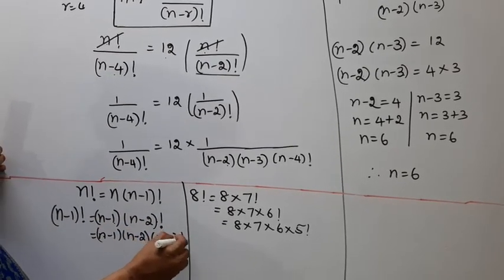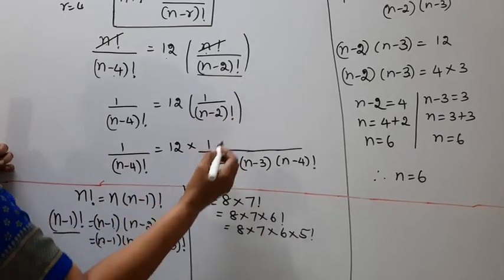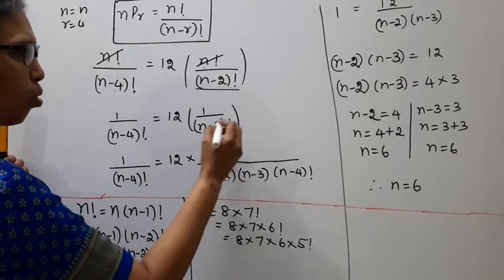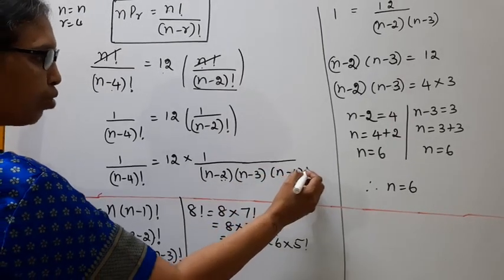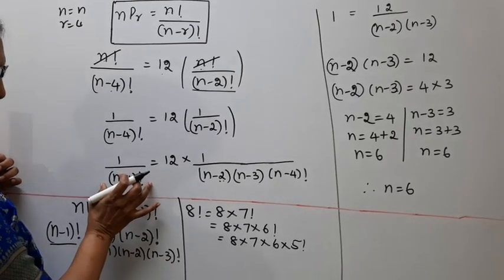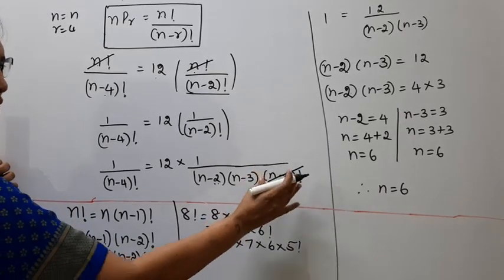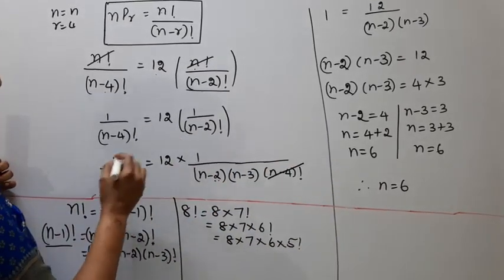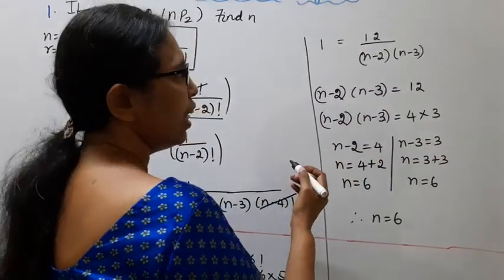Continuing: n minus 2 factorial, n minus 3 factorial, n minus 4 factorial terms cancel out. After full simplification, we arrive at: 1 equals 12 divided by n minus 2 into n minus 3.